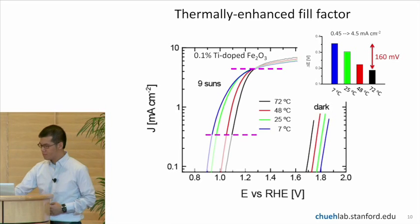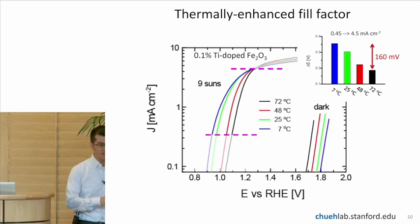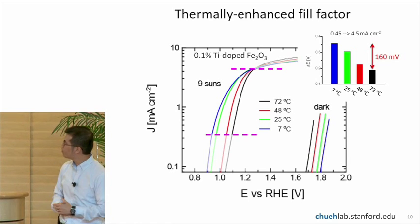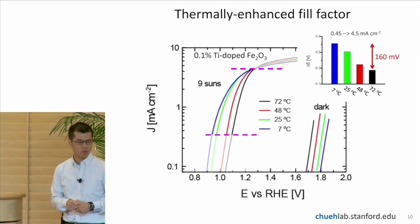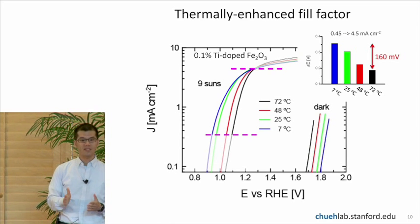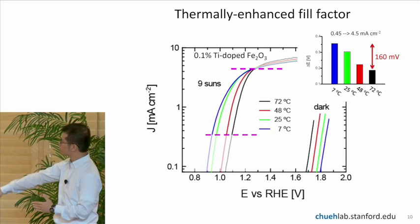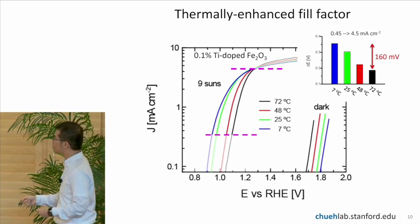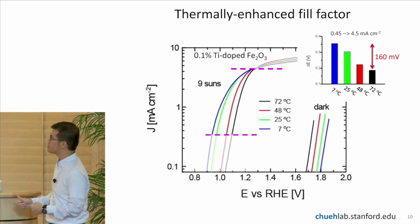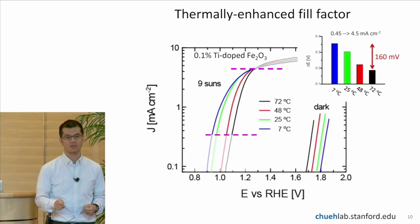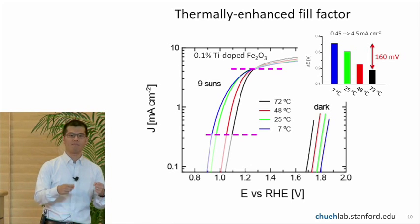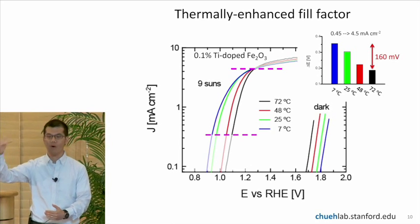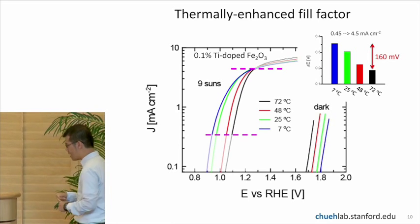And I can show you this better by blocking out some of the data. So if you just focus on the range between 0.3 and 3 milliamps per square centimeter, you can actually see the curvature changing. So when the temperature is low at 7 degrees Celsius, it's quite a bit curved. And when you increase the temperature to 72 degrees Celsius, the curvature decreases substantially. So this means that the amount of excess voltage you need to get to the high current you want is now less.